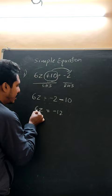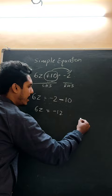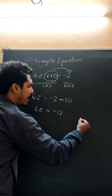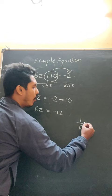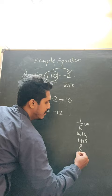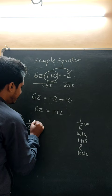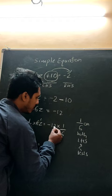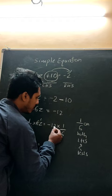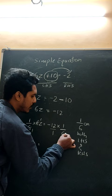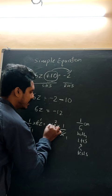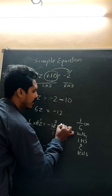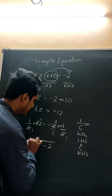Now we need to cancel the 6. We multiply by 1 divided by 6 on both LHS and RHS. So 1 by 6 into 6Z equals minus 12 into 1 divided by 6. The 6s cancel, leaving Z. On the RHS, 12 divided by 6 is 2, and with the minus sign, minus into plus is minus, giving minus 2. The value of Z is minus 2.